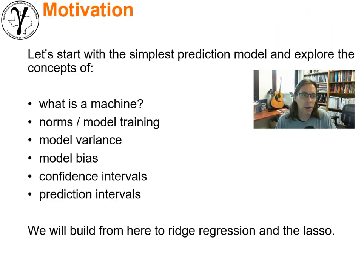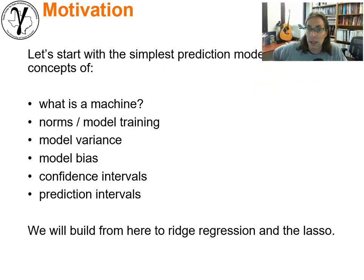What's our motivation? We'll start with the simplest prediction model we could come up with and explore concepts like what is a machine, what are norms. I have a previous lecture about L1 and L2 norms. Model variance, model bias, confidence intervals, prediction intervals, and so forth. We can do that quite readily with a linear regression model. It's very powerful. We will build from here to ridge regression, lasso, and so forth.